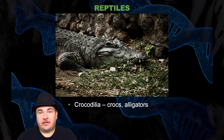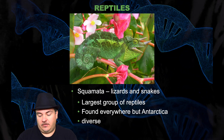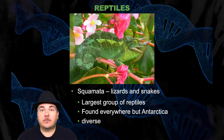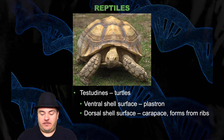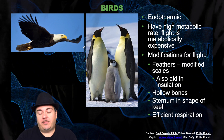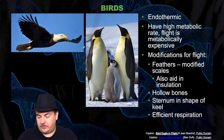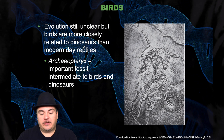Within the reptiles you have the Crocodilia, which are the crocodiles and alligators. You have the tuataras, which are only two living species found in New Zealand. Then you have the Squamata, which are the lizards and snakes — this is the largest group of reptiles, found everywhere on this planet except Antarctica, and they're a very diverse group. Then you have the turtles and the birds. Now birds are endothermic — they generate their own body heat, much like dinosaurs probably did. They have a high metabolic rate because flight is very metabolically expensive. They have modifications for flight: feathers, which are modified scales that also aid in insulation; hollow bones to reduce weight; a sternum in the shape of a keel; and efficient respiration.